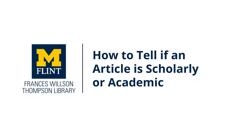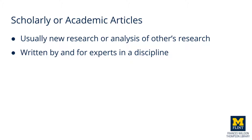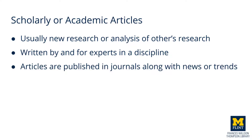In this video, you'll learn some characteristics that will help to determine whether or not an article is considered scholarly or academic, as you'll likely be asked to find academic articles for your coursework. Academic articles are usually new research, or analysis of others' research, and are written by and for experts in a discipline. These articles are published regularly in journals, which along with research often also publish news or trends in the discipline.